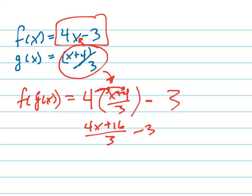Let's get common denominators. 3 is the same as 9 thirds. So that equals 4x minus, I'm sorry, plus 16 minus 9 is 7.